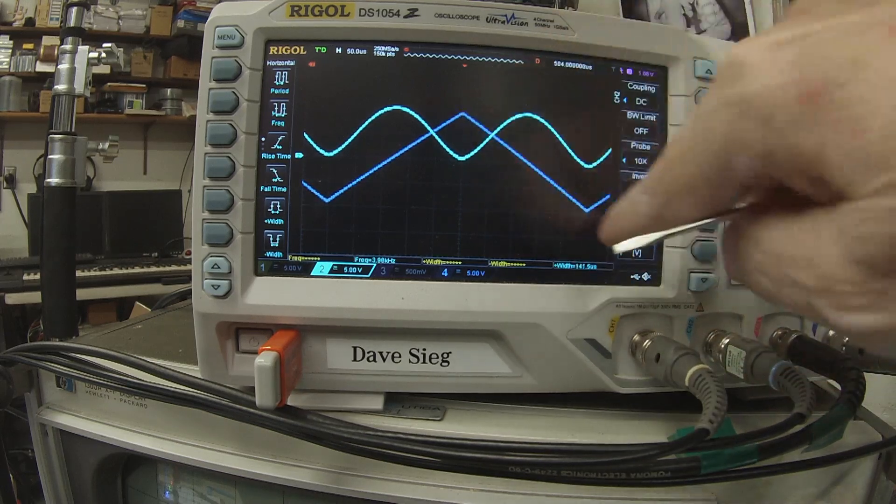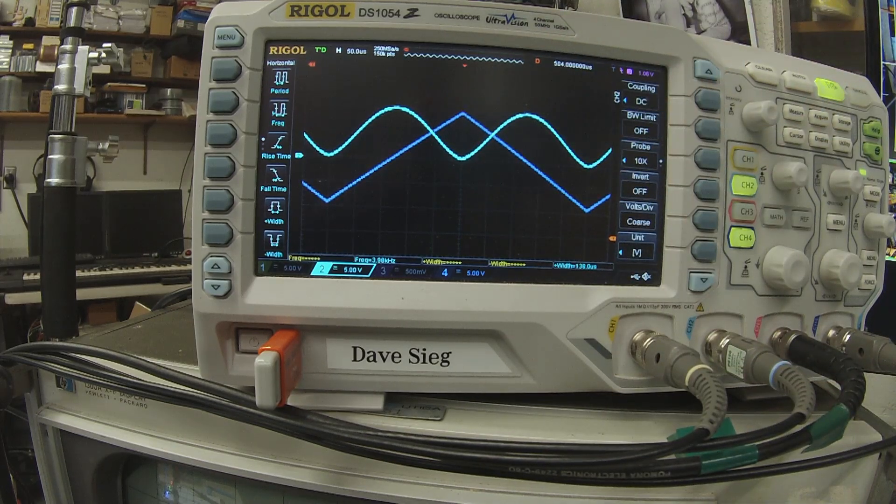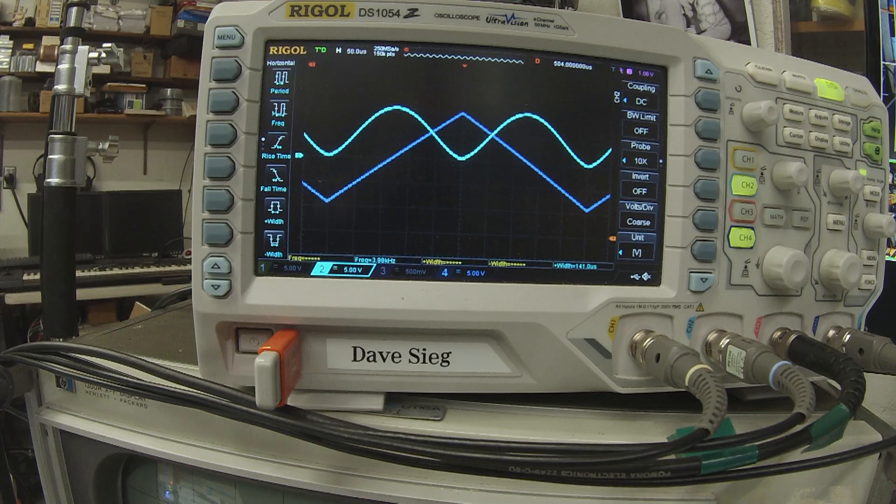And all of that came from a triangle wave. It's kind of a neat thing that multipliers do, and a lot of people don't think about using them to square things.